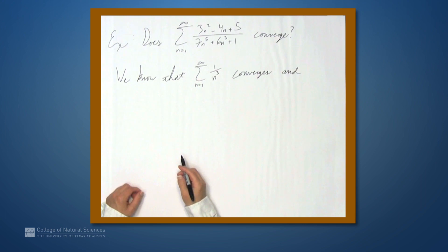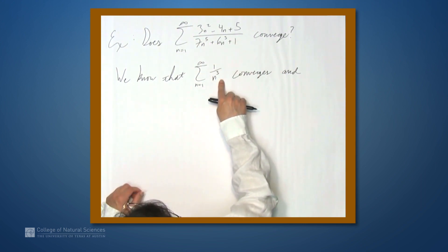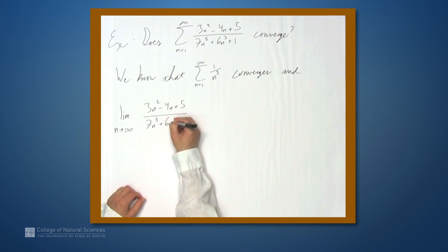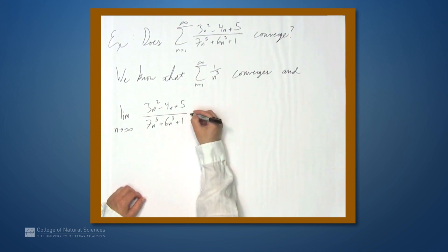And now let's look at the limit of these ratios. We're going to take the nth term here, divide it by the nth term here, and then take the limit as n goes to infinity. So the limit as n goes to infinity of 3n squared minus 4n plus 5 over 7n to the fifth plus 6n cubed plus 1 divided by this term. But if we divide by 1 over n cubed, that's the same thing as multiplying by n cubed. So this is this whole thing times n cubed.